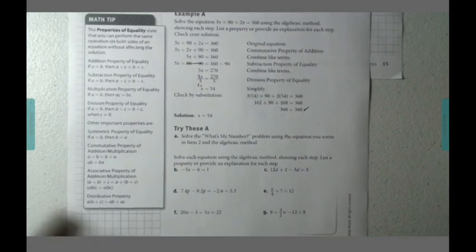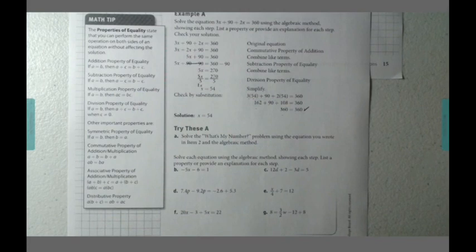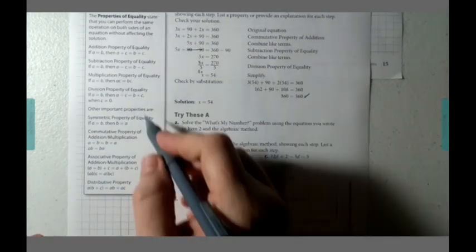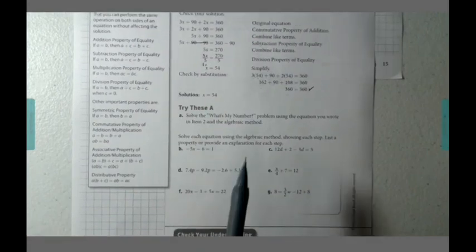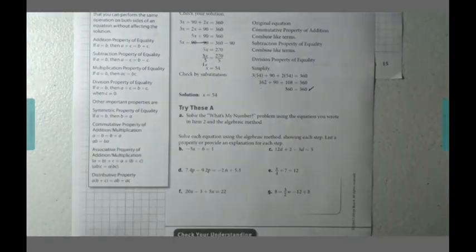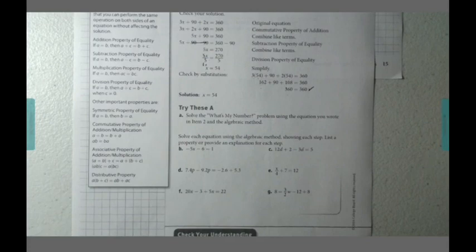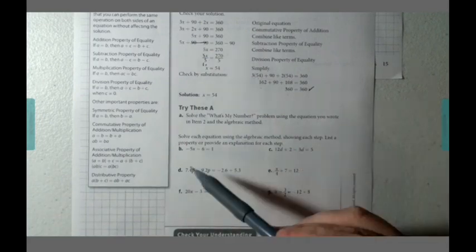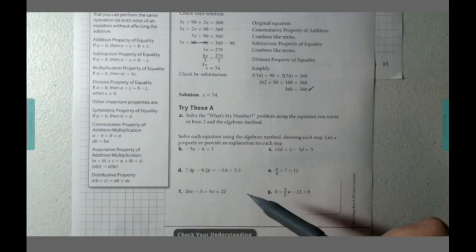I want you and your partners or your table mates to take the next 10 minutes to work through all of the try these A. One of them, the first one is going to ask us to recall the equation we set up on number 2. And make sure that we got what we answered whenever I did the guess and check method. Don't forget to make sure you check your solution.